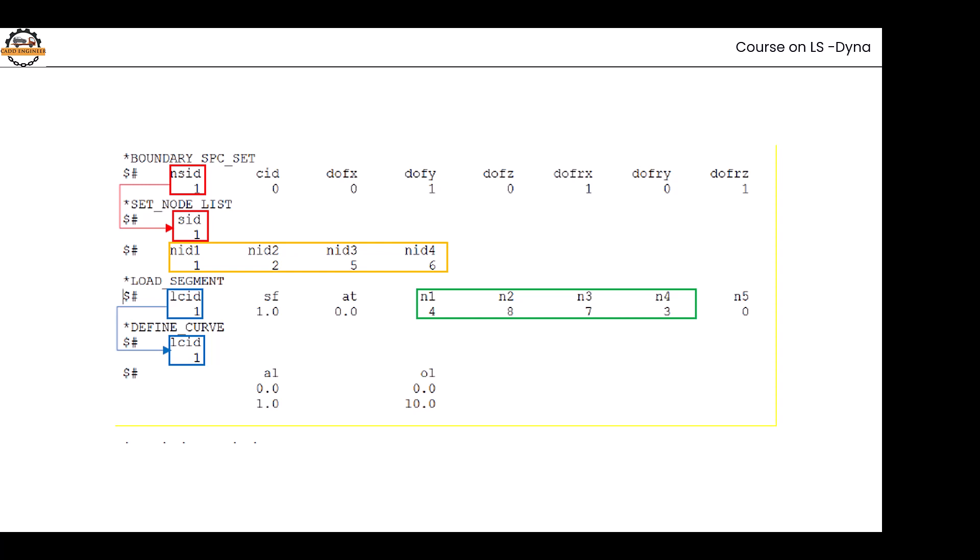When defining boundary conditions, we make node sets or load sets. When defining loads, they can be defined by making a load curve, or sometimes no load curve is needed. NSID stands for node set ID, LCID stands for load curve ID. When defining loads in the form of curves, we require values as given in equations.